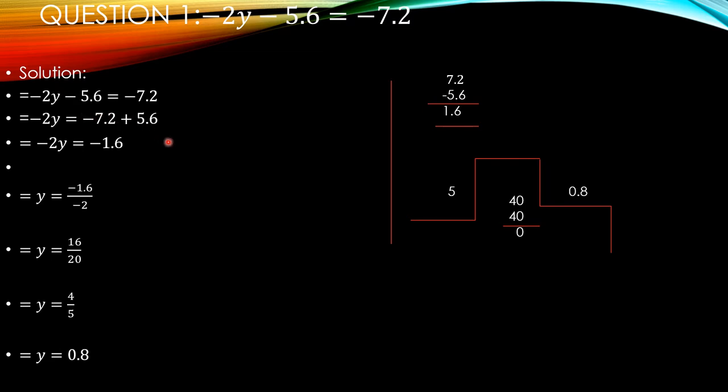Now the like terms will be added and subtracted in algebra. But in the equation, if you move from right to left or left to right, the sign will be changed. Minus change into plus, plus change into minus, multiply change into division, and division change into multiplication. Now minus 5.6 is on the left hand side. When we move on the right hand side, it become plus.